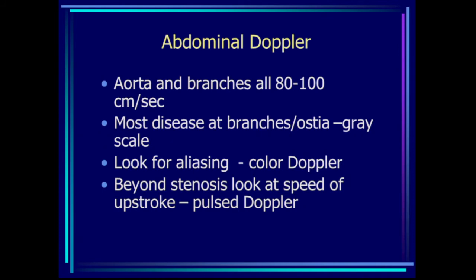Most atherosclerotic disease in these branches occurs at the ostia, where the vessels are arising from the aorta. We'll look at those areas with grayscale. After the grayscale evaluation, color Doppler is applied, and we're looking for focal areas of aliasing — the aliasing giving us a sign that we have a high-velocity area. Then pulsed Doppler interrogation is performed right at the area of color aliasing to look for a peak systolic velocity. It's also important to look at the vessel beyond the level of the stenosis using pulsed Doppler and waveform analysis.